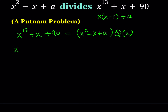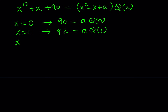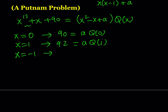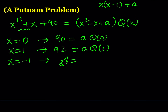Let's start with x equals 0. If x is equal to 0 on both sides then we get 90 equals a times q of 0. If x is equal to 1 then we get 1 plus 1 plus 90, which is 92, equals a times q of 1. I also need to use x equals negative 1. Replacing x with negative 1 gives us negative 1 minus 1, which is 88 on the left, and on the right negative 1 squared plus 1 plus a, which is 2 plus a, multiplied by q of negative 1.